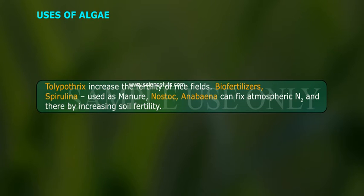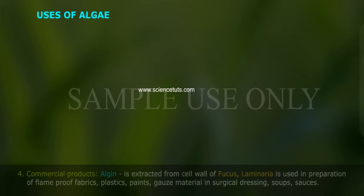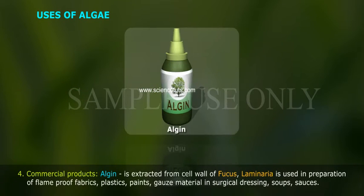Tolypothrix increases the fertility of rice fields. Biofertilizers such as Spirulina are used as manure. Nostoc and Anabaena can fix atmospheric N2, thereby increasing soil fertility.